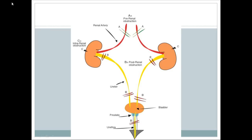This slide depicts the common causes of renal failure. Renal failure can occur due to reduced blood flow, direct kidney damage by substances in the blood, or obstruction of the renal tract anywhere from the pelvis to the urethra or bladder. These correspond to three basic mechanisms: pre-renal, renal (intrinsic), and post-renal.